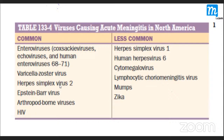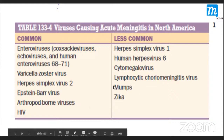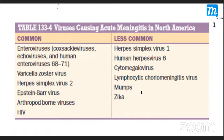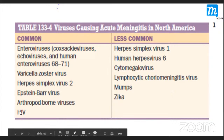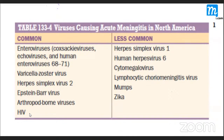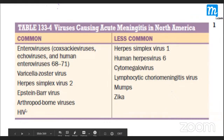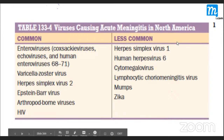HSV-2 causes meningitis, while HSV-1 causes encephalitis. Mumps is decreasing due to vaccination. HIV produces meningitis or encephalitis when there is initial viremia — when the person first gets infected and there is gross viral multiplication. Cytomegalovirus, lymphocytic choriomeningitis virus, and mumps are also causes of viral meningitis.